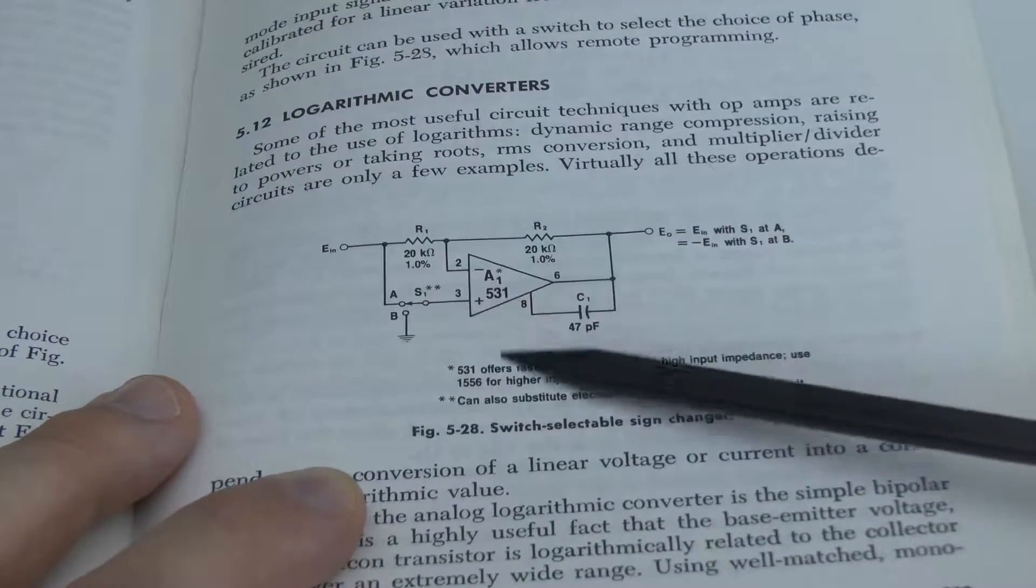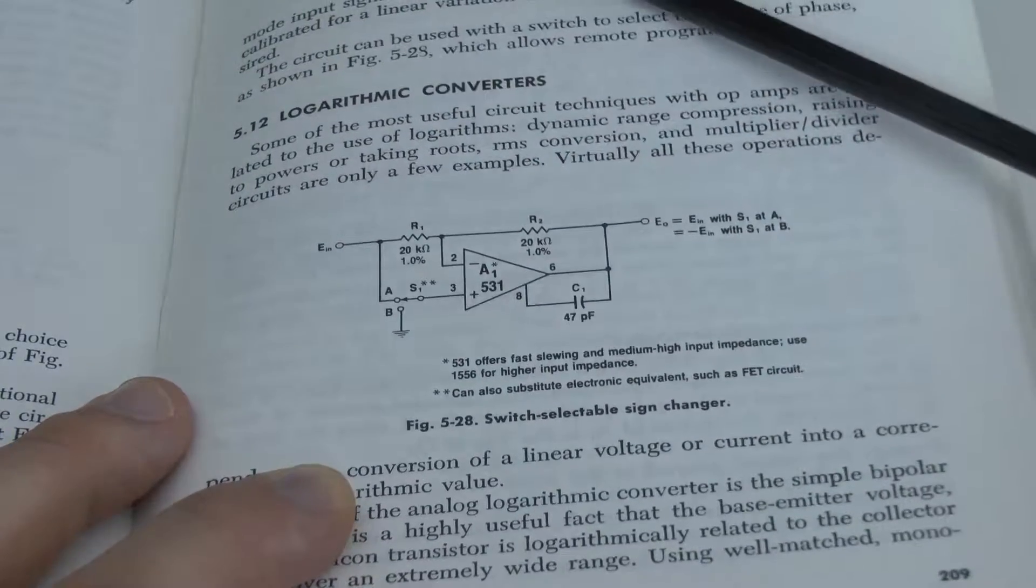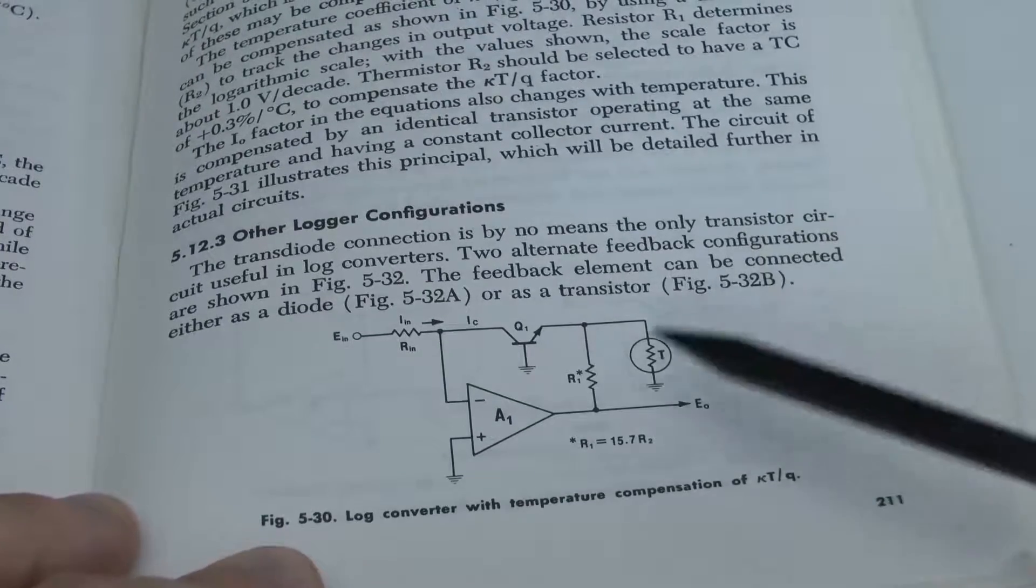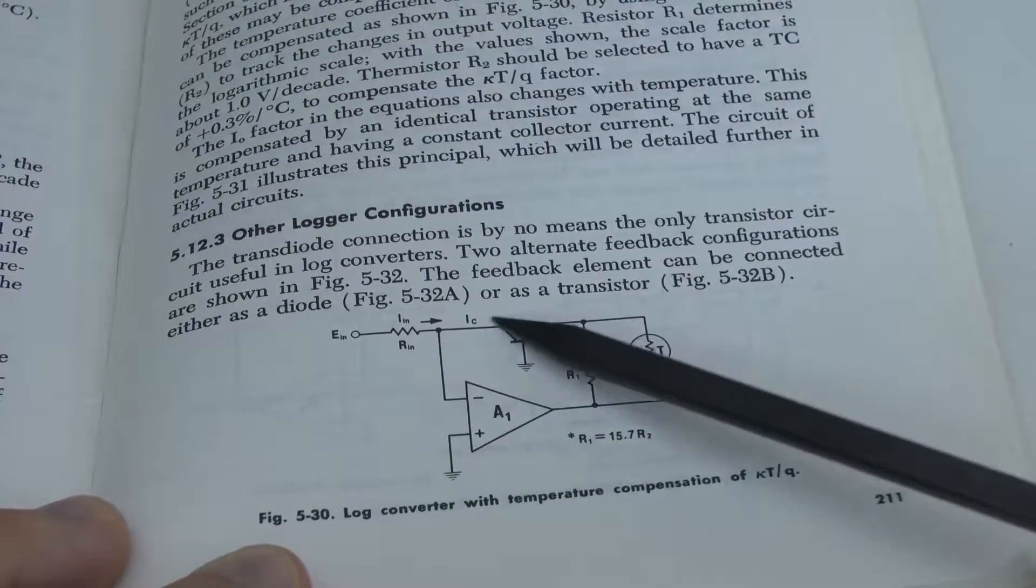You see here, the circuit basically is ready-to-go. Here, our switch-selectable sign-changer, which belongs above, but here we have an actual log converter, for example.